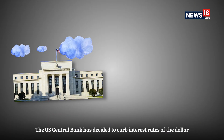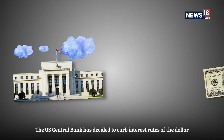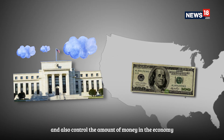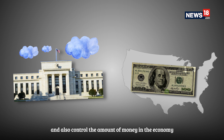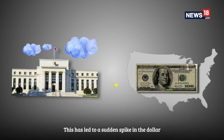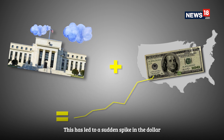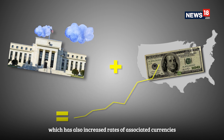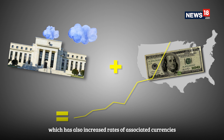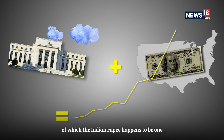The US central bank has decided to curb interest rates of the dollar and also control the amount of money in the economy. This has led to a sudden spike in the dollar, which has also increased rates of associated currencies, of which the Indian rupee happens to be one.